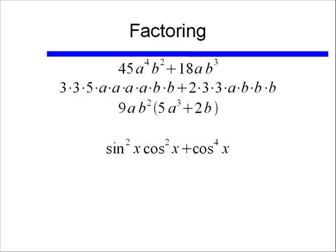Now let's look at this in terms of trigonometric functions. If I say sine squared x cosine squared x plus cosine to the fourth x, I can find a common factor of cosine squared x, and if I pull that out of my two terms, I'm left behind with sine squared x plus cosine squared x.